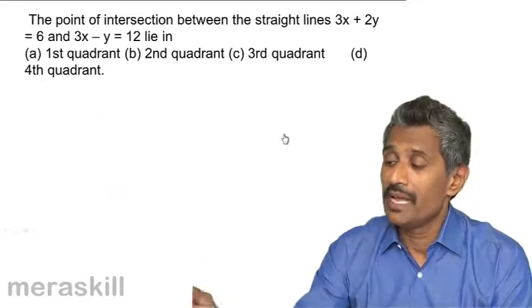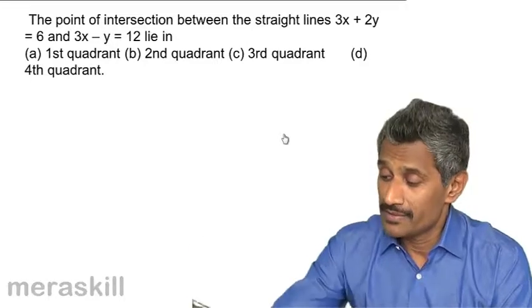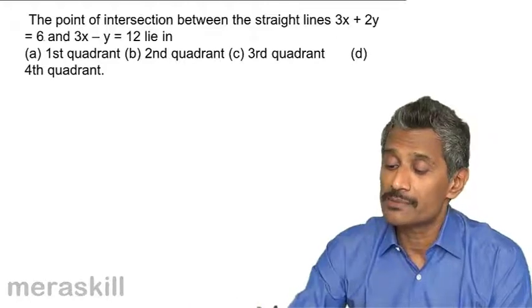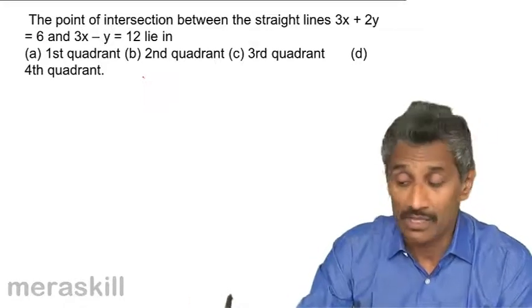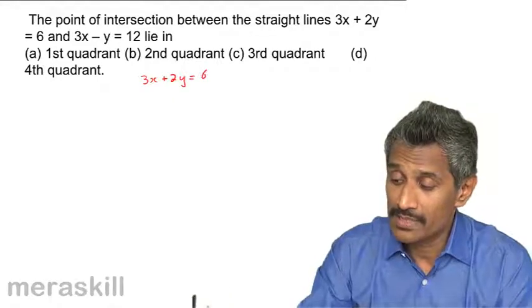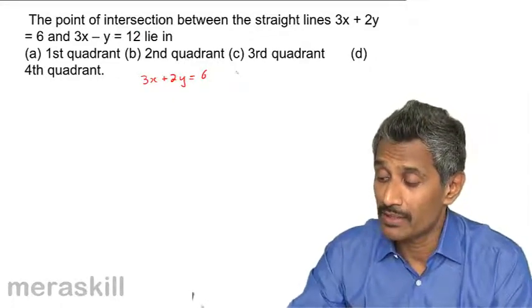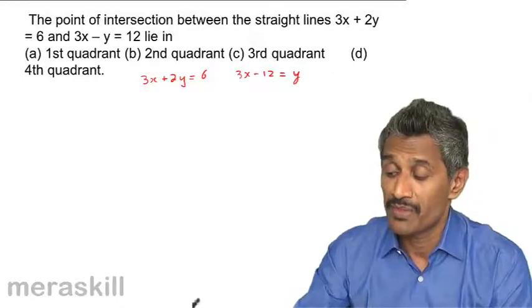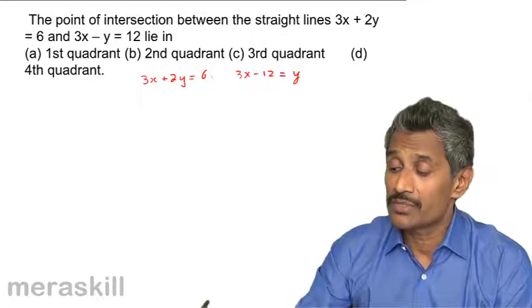Then, here we have an interesting case. Now, the point of intersection between the straight line 3x plus 2y is equal to 6. Let's write down the equation 3x plus 2y is equal to 6. And 3x minus y is 12, which can also be written as 3x minus 12 is equal to y. The point of intersection of these two lines.